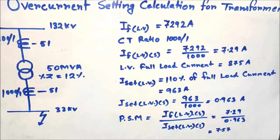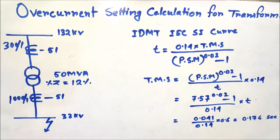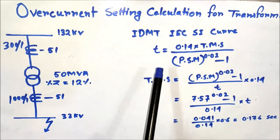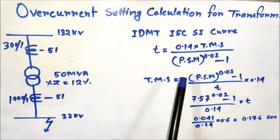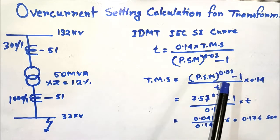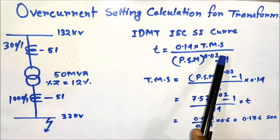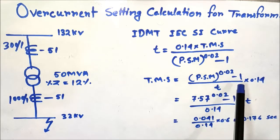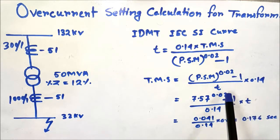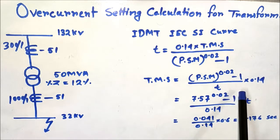Now we will calculate the TMS — the time multiplier setting — of the LV overcurrent relay, considering that it should trip within 600 milliseconds under maximum fault current conditions. As per the IEC standard inverse (IDMT) curve, the trip time formula is: t = 0.14 × TMS / (PSM^0.02 − 1). Rearranging for TMS: TMS = (PSM^0.02 − 1) × t / 0.14, where the trip time t is 0.6 seconds.